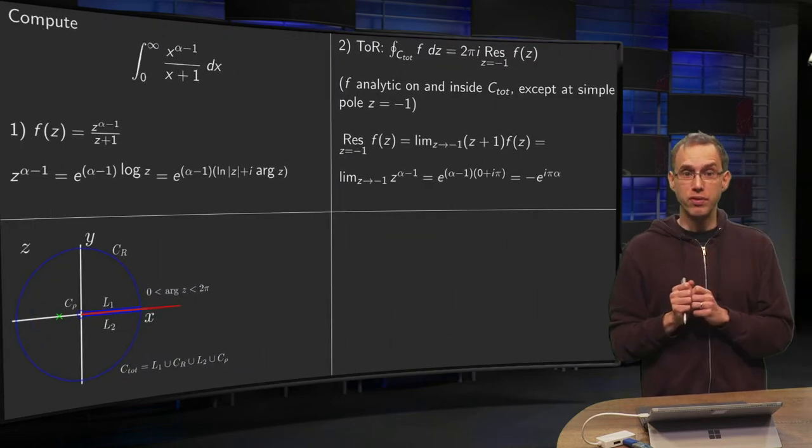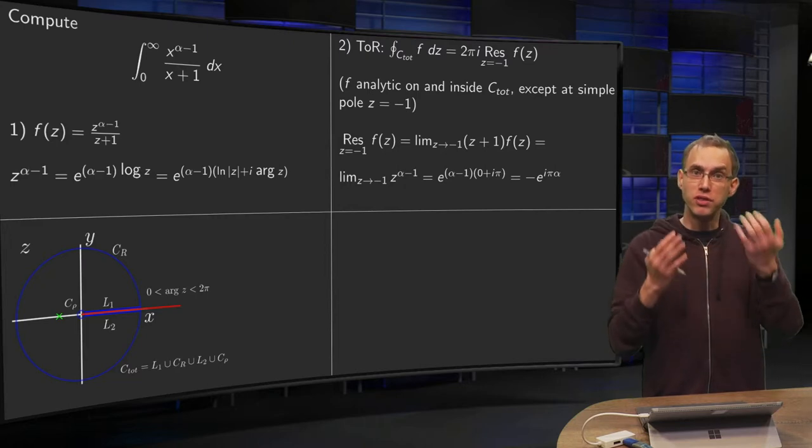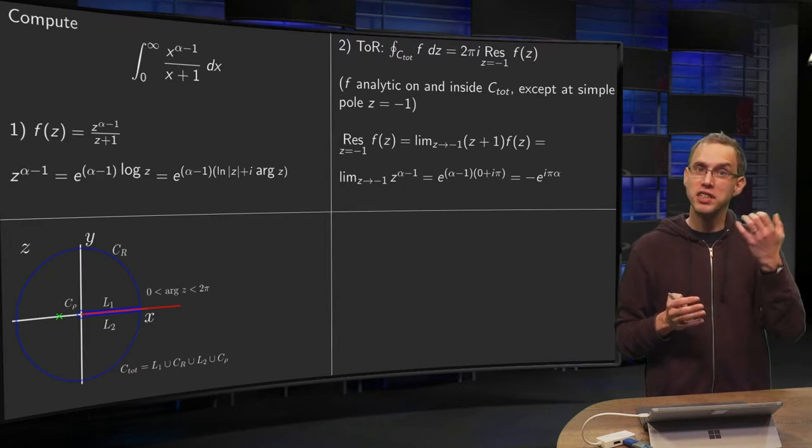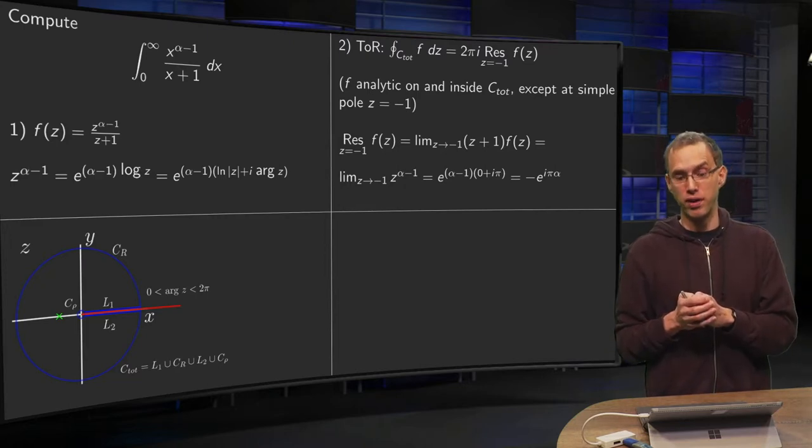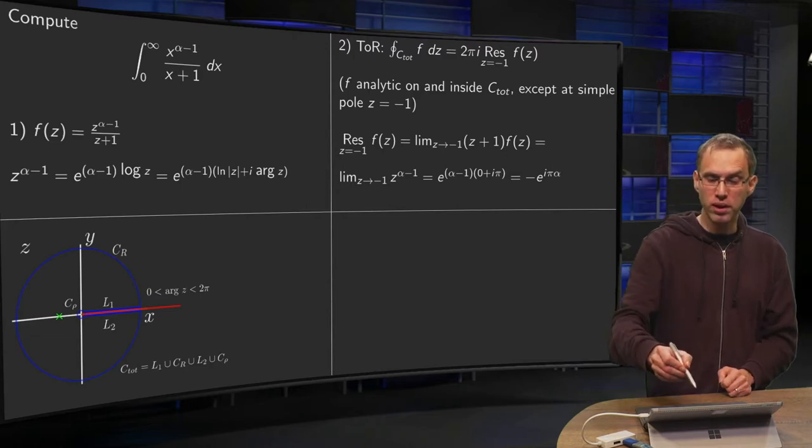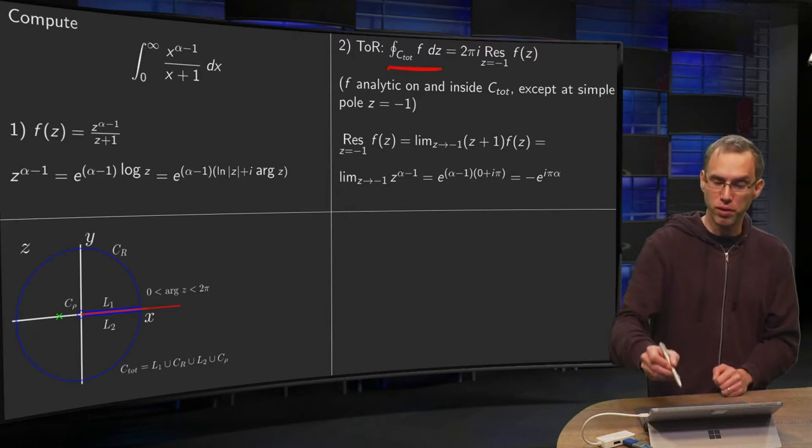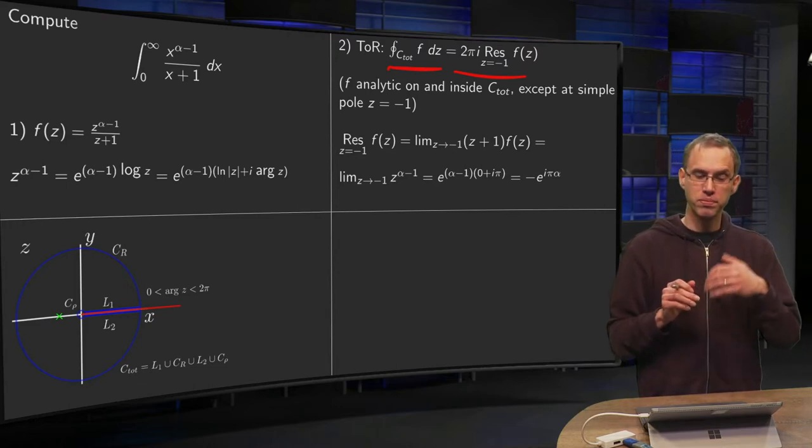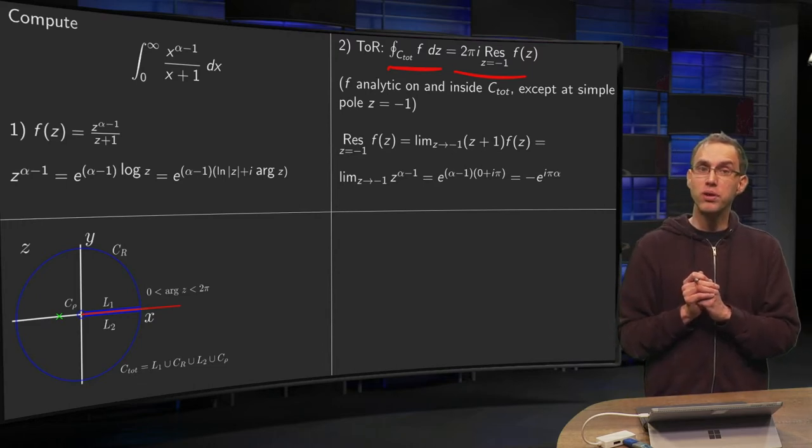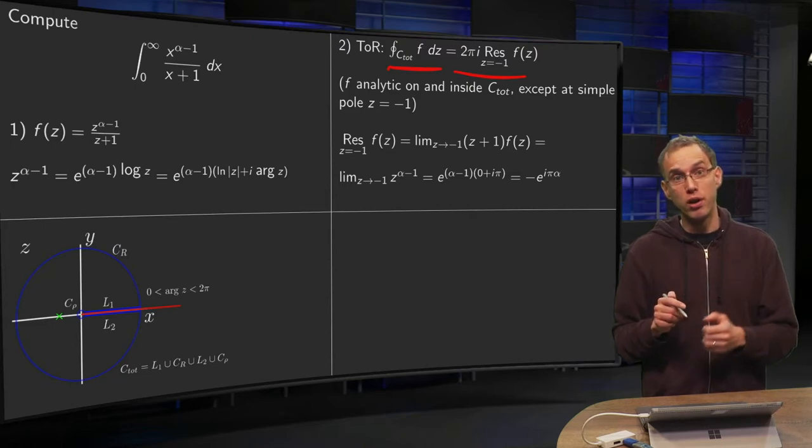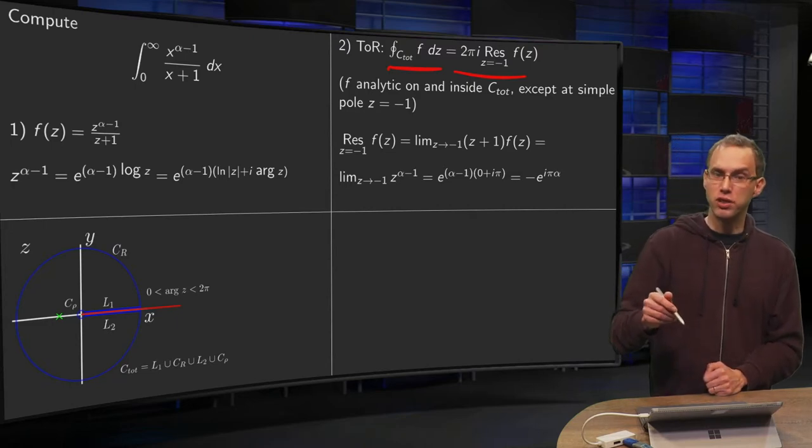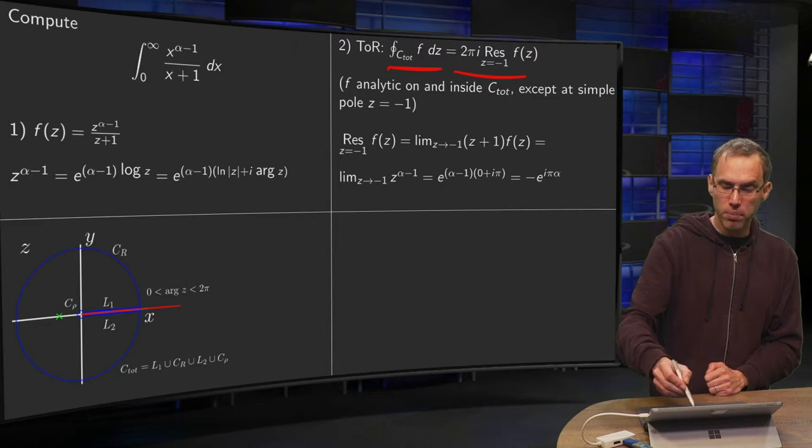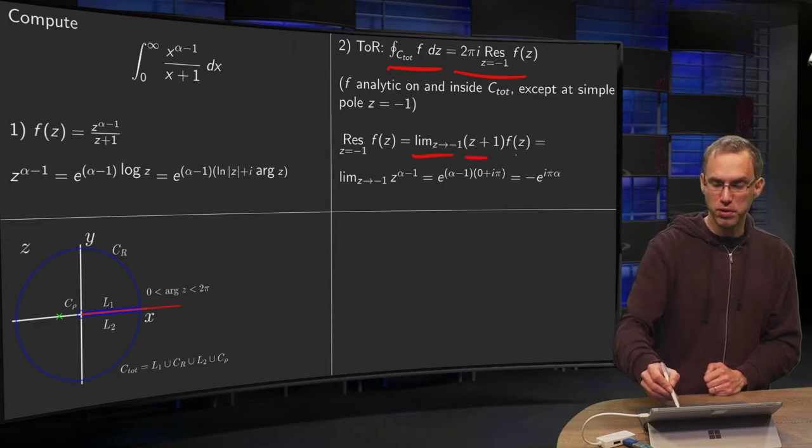Now first we are going to apply the theorem of residues. Function f is analytic on and inside C except at z equals minus 1, where we have a first-order pole. So the integral along the total contour will be 2pi i times the residue at z equals minus 1. Now how are we going to compute that? Well, we are lucky, we have a simple pole, so we can just use the definition and put limit z to minus 1 of z plus 1 times f of z.